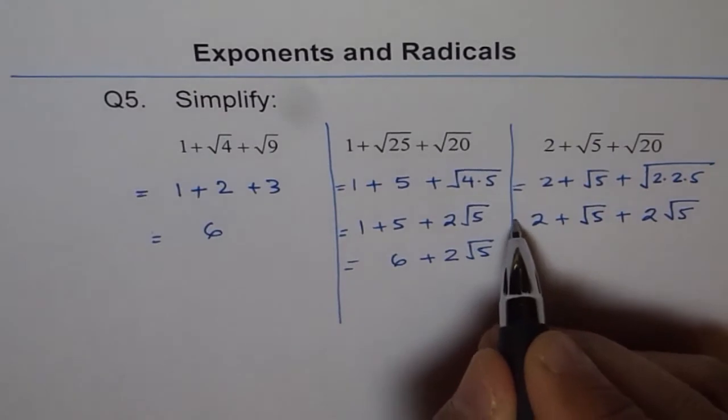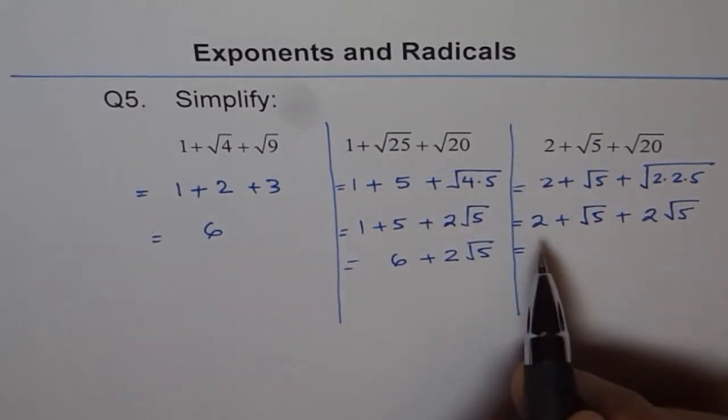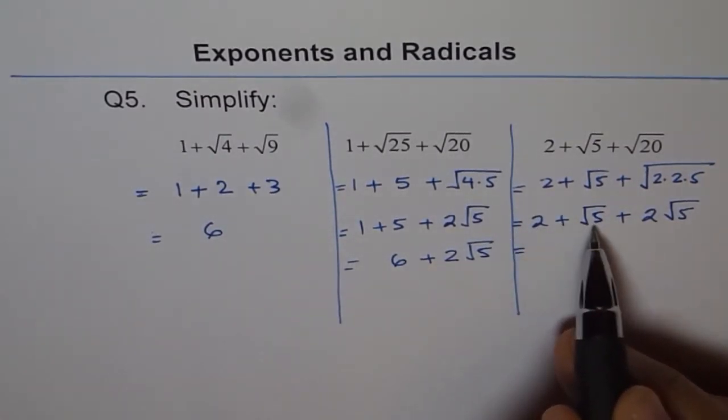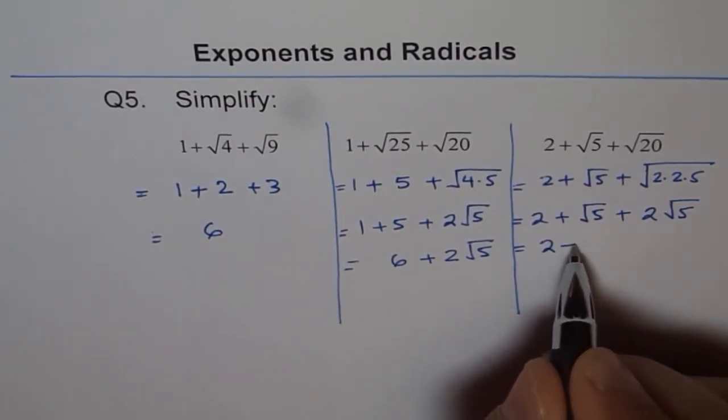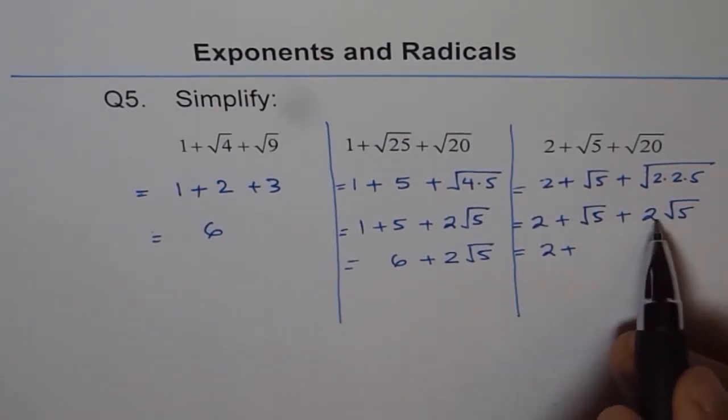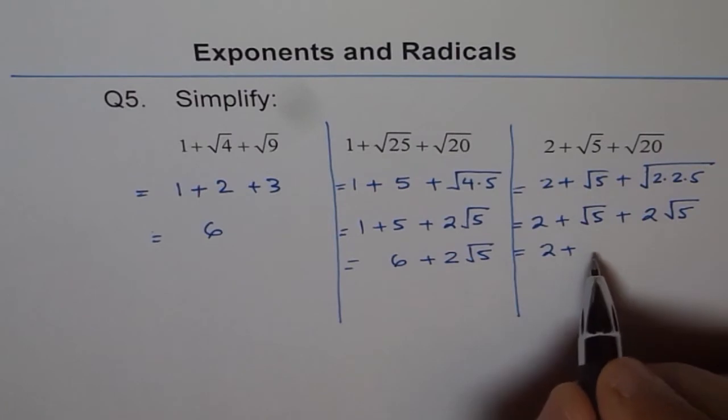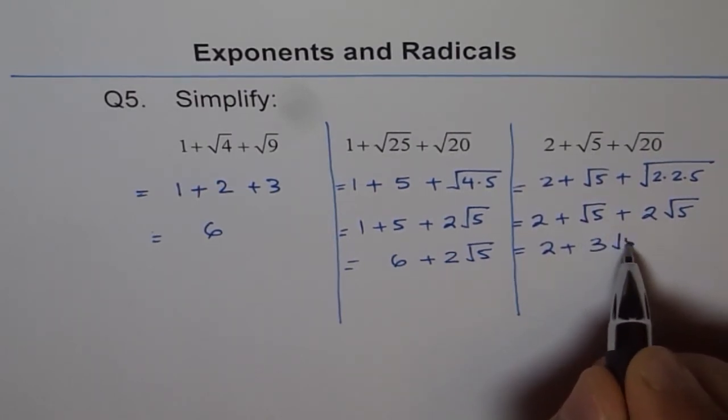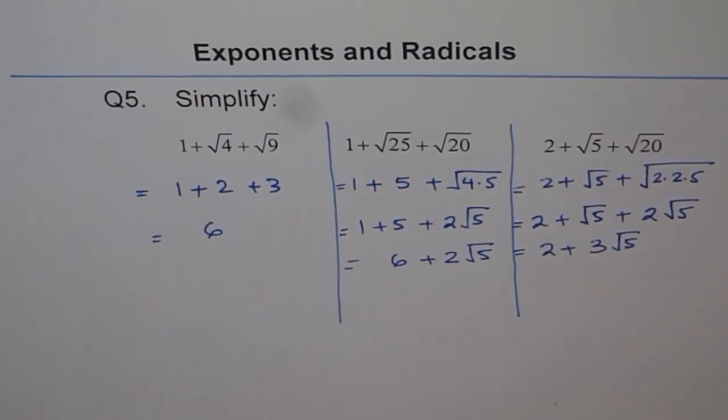And always put equality sign here. Now, 2 plus this, that is not a like term. So we cannot add 2 and square root 5. So we will write 2 as such, but these are like terms. There are square root 5, square root 5. Things like 1 apple and 2 apples. When you combine, you get 3 apples. So we can write 3 square root 5. So that is how we can add or subtract square roots.